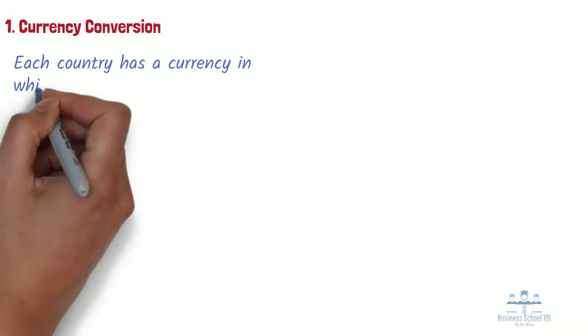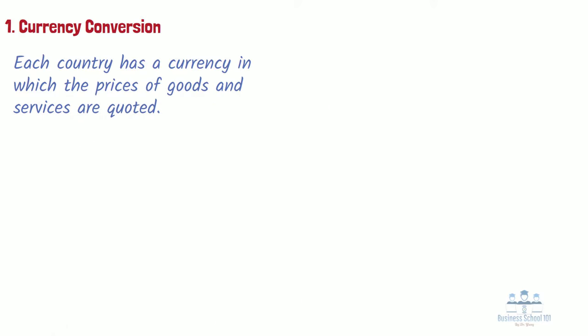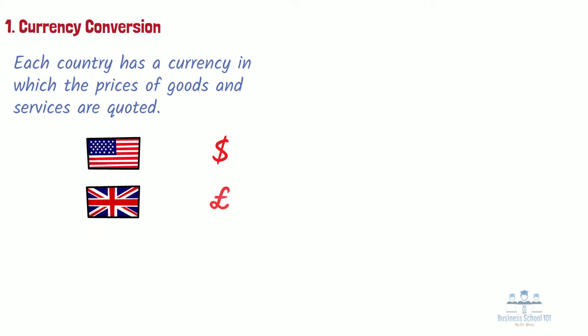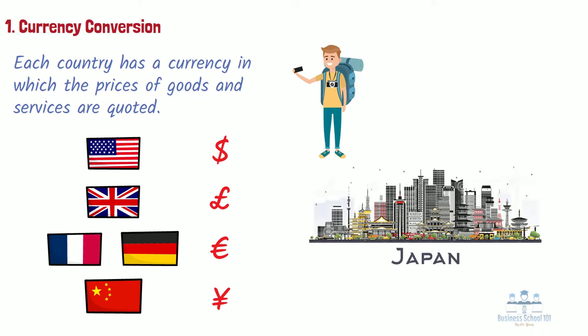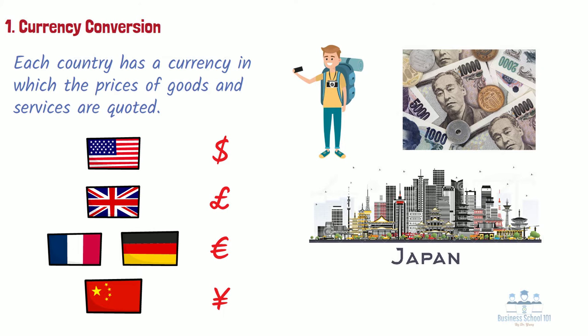First, currency conversion. Each country has a currency in which the price of its goods and services are quoted. In the United States, it is the dollar. In Great Britain, the pound. In France, Germany, and other members of the eurozone, it is the euro. In China, the yuan, and so on. In general, within the borders of a particular country, one must use the national currency. For example, a US tourist cannot walk into a local shopping mall in Japan and use US dollars — the tourist must use the Japanese yen. Fortunately, the tourist can go to a bank and exchange their dollars for yen, and then they can shop in the mall.